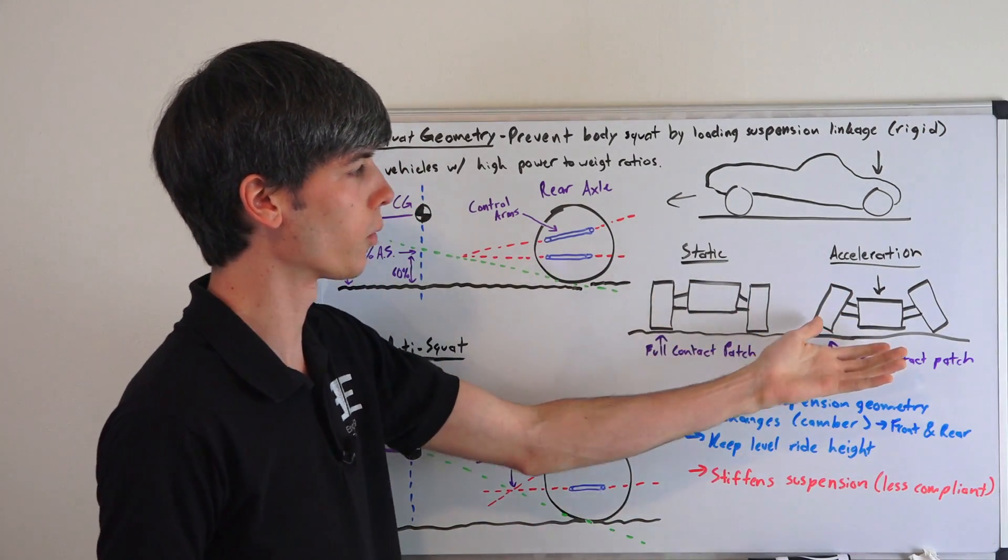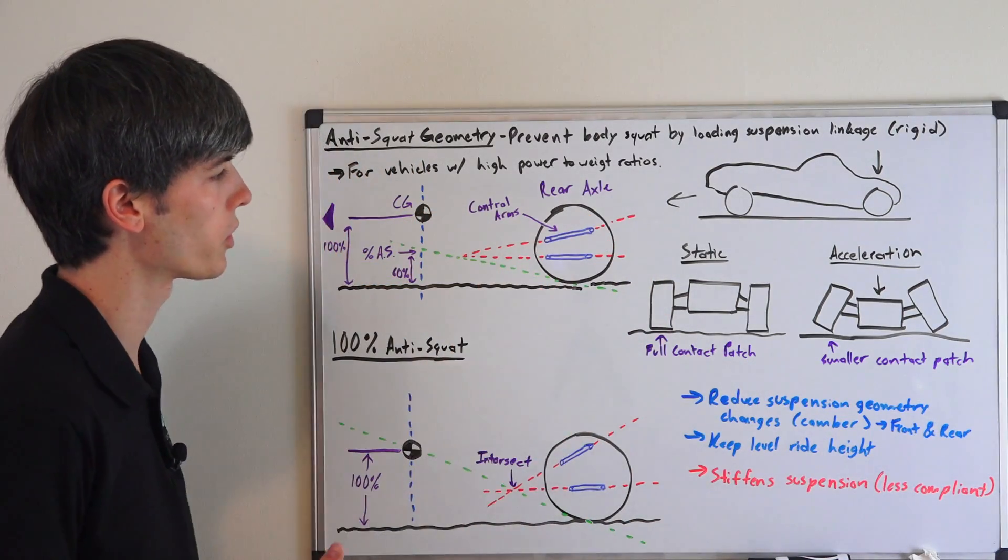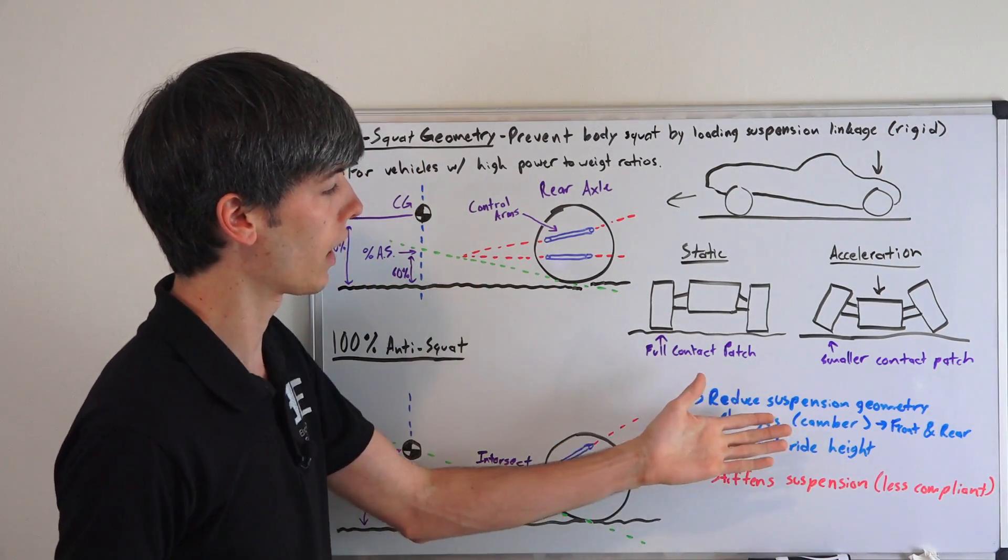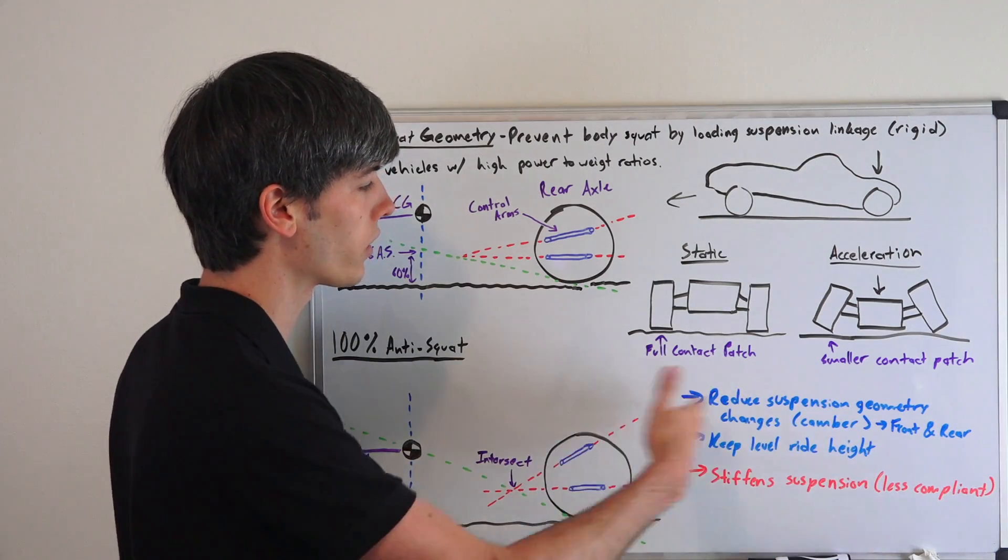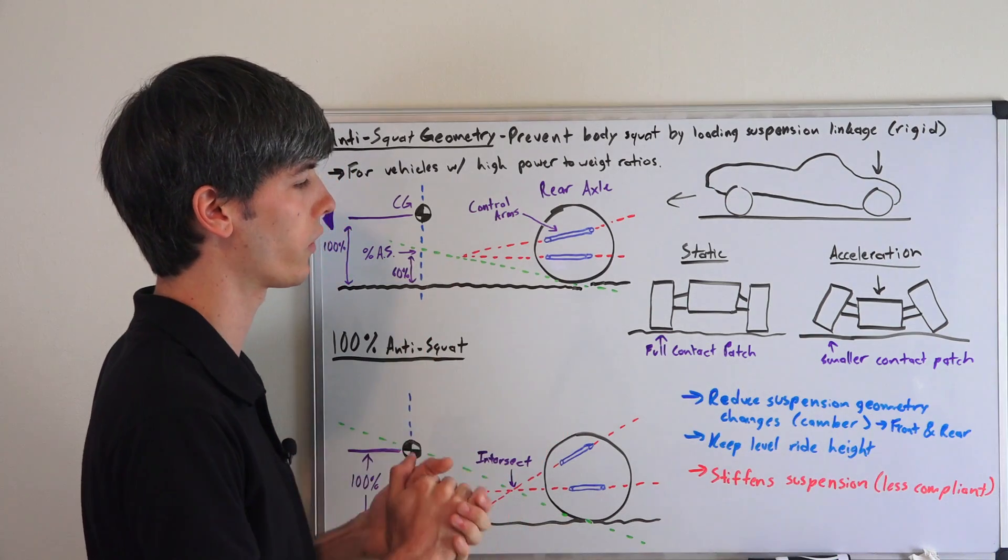So you don't want to have too much body lean because not only will it influence the rear, but you'll also have lift in the front and you'll change the suspension geometry up front as well. So ideally you're trying to maintain a certain suspension geometry, and you're also trying to keep a level ride height, and that could be for aerodynamic purposes.